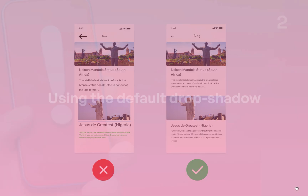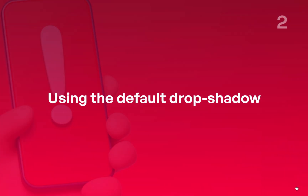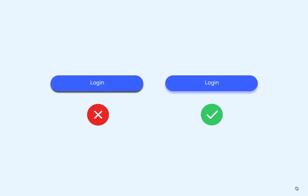Number two is using the default drop shadow. A lot of people make this mistake. When using drop shadow in your design, you need to remember that less is more. Using too many or too much drop shadows can make your design look messy and distracting.